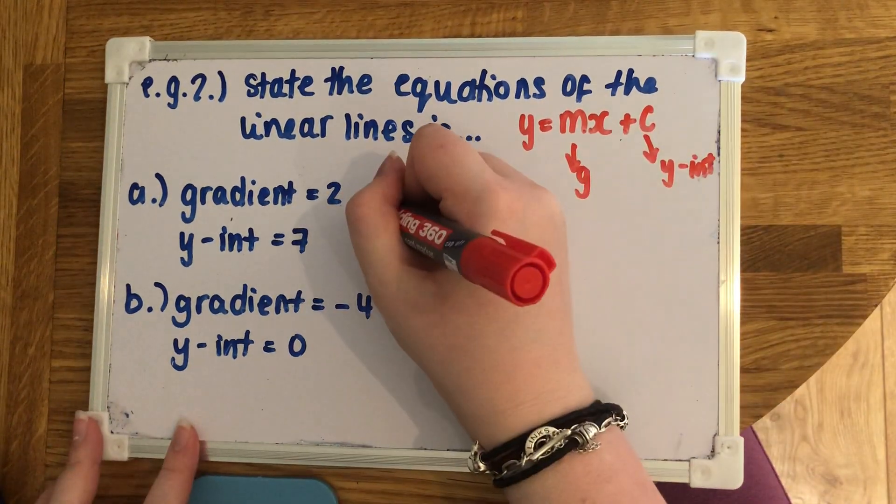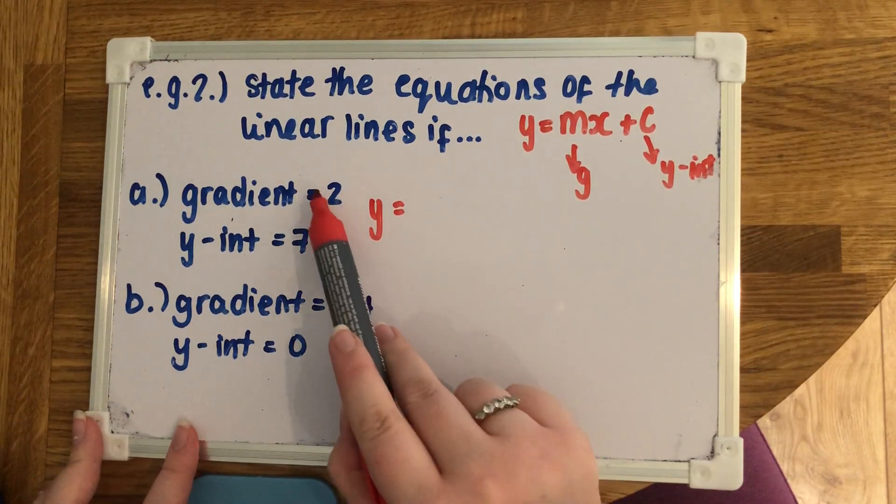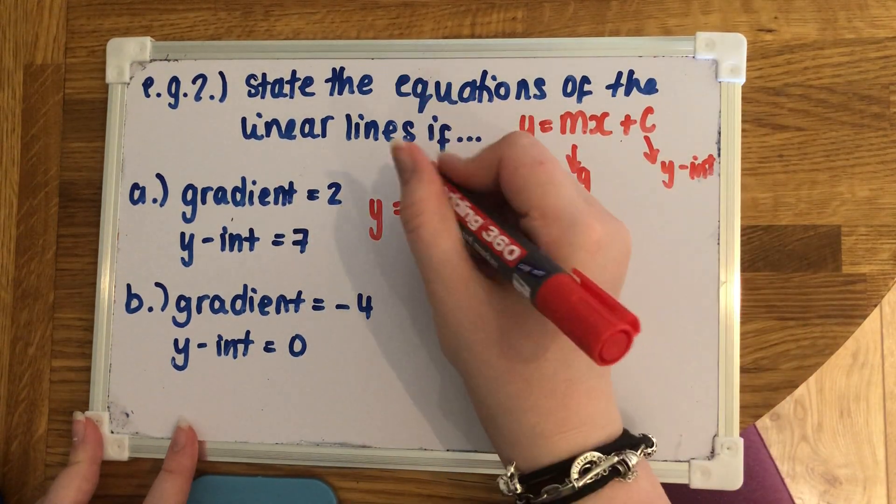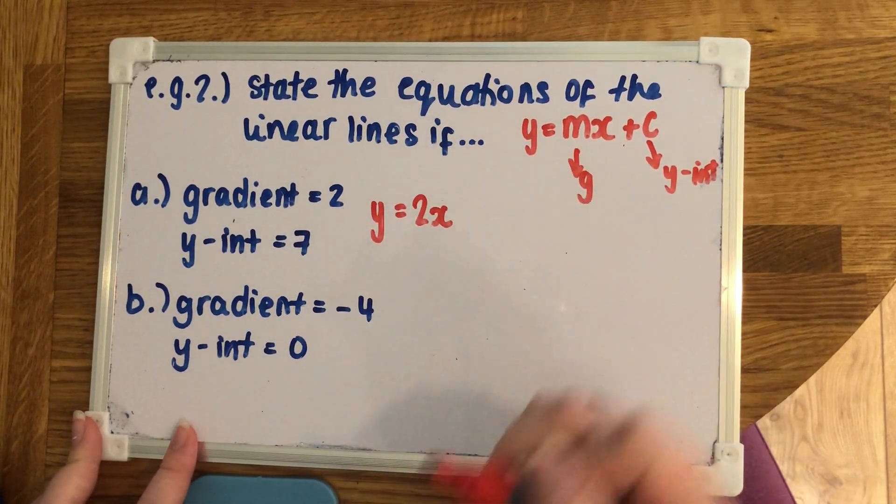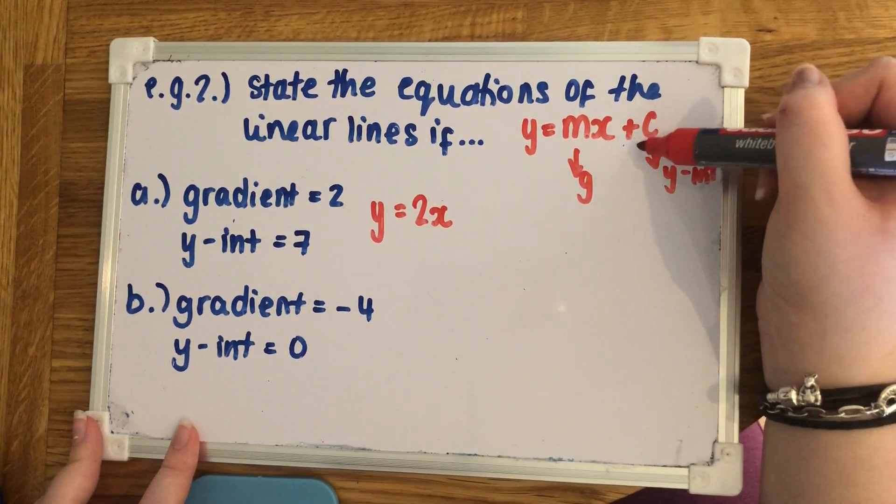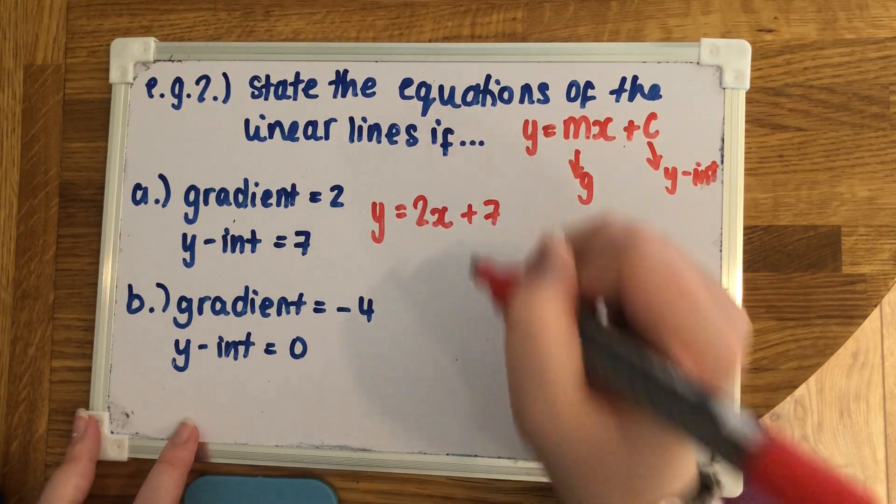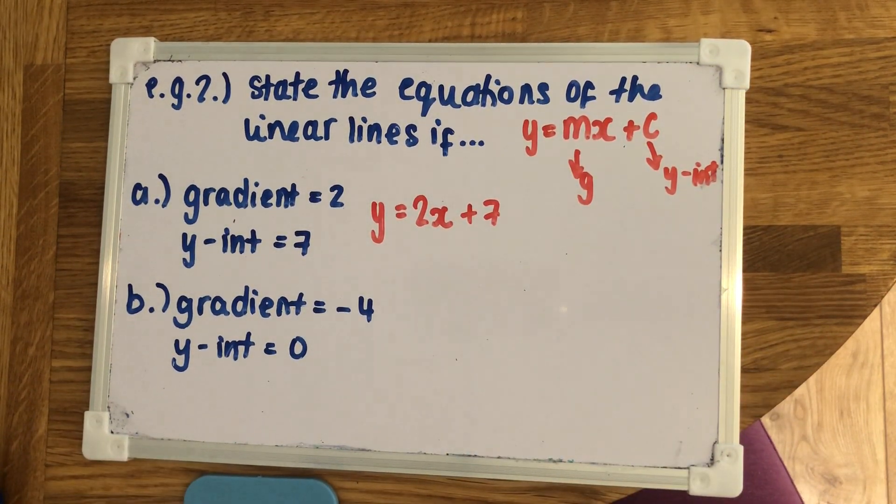So both of these are going to be equal, y equals. Now we know for this one, the gradient is 2. So that m, we're going to change to a 2. And it will still keep the x. The y-intercept is whatever is added on. So the y-intercept is here. So 7. So the answer will be y equals 2x plus 7.